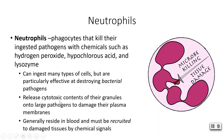Neutrophils tend to live in the blood, so they have to be recruited to the site of damaged tissues. Chemical signals are sent out into the blood, and when those signals reach the neutrophils, they exit the blood, go to the site of tissue damage, and if there's any bacteria there, they will chew them up.